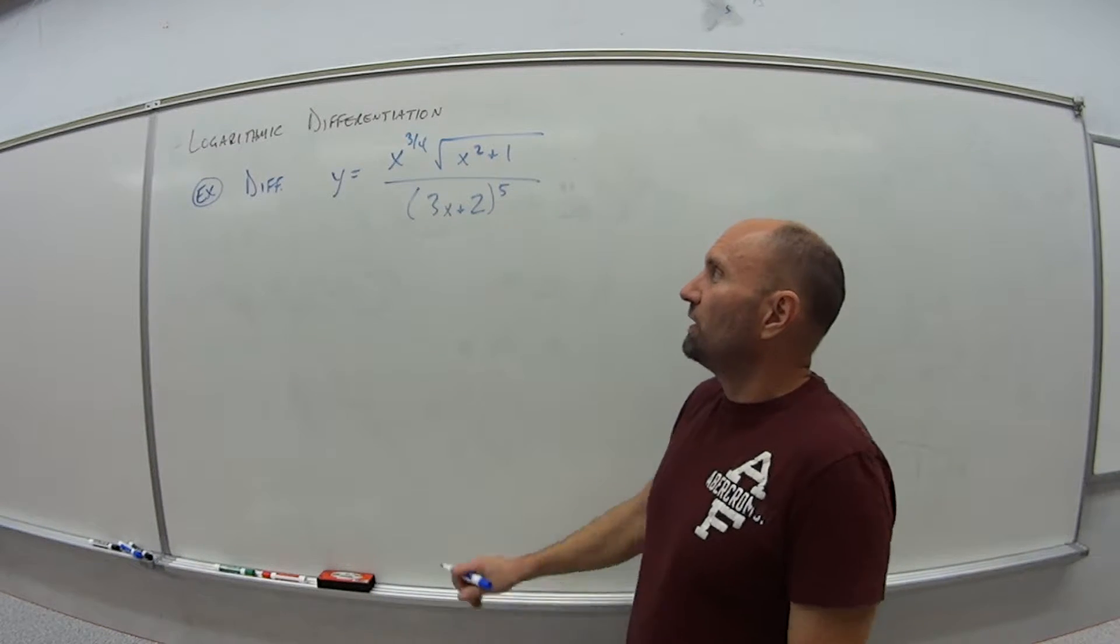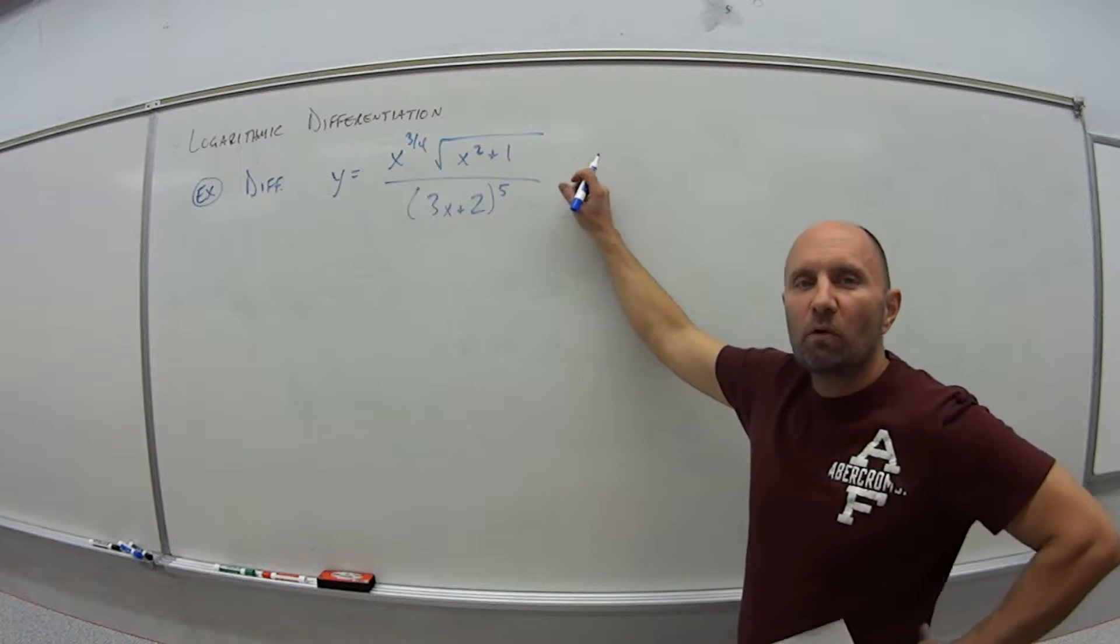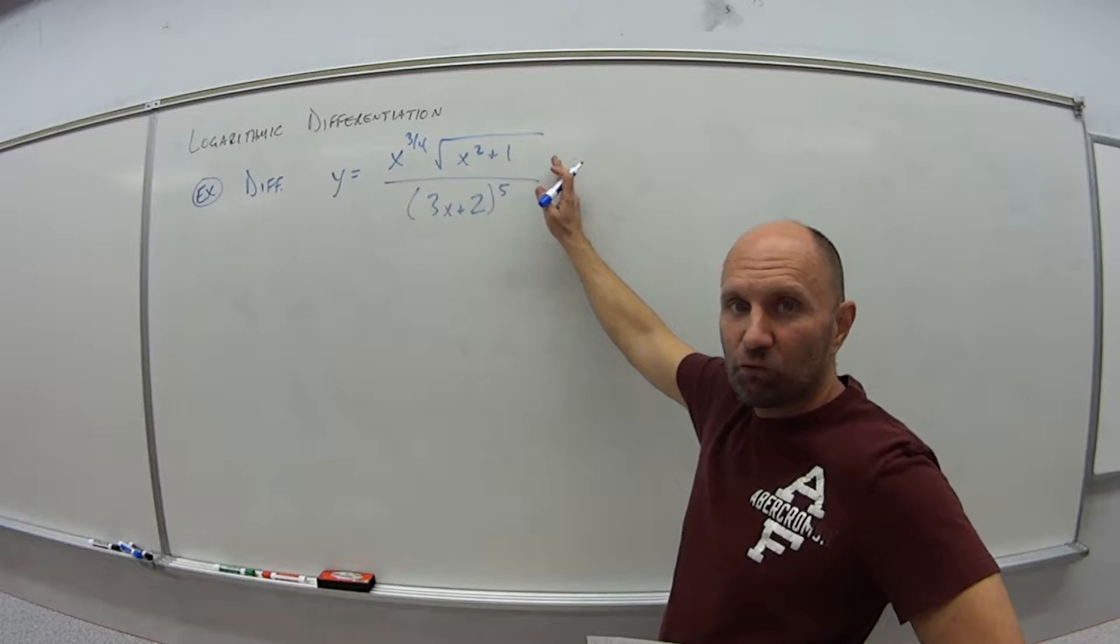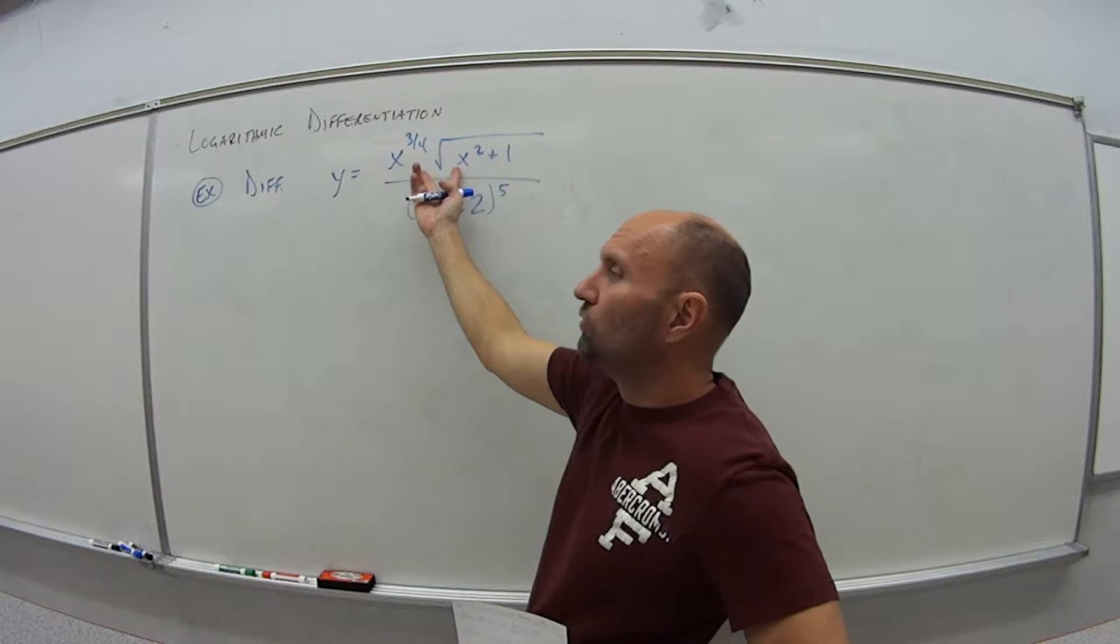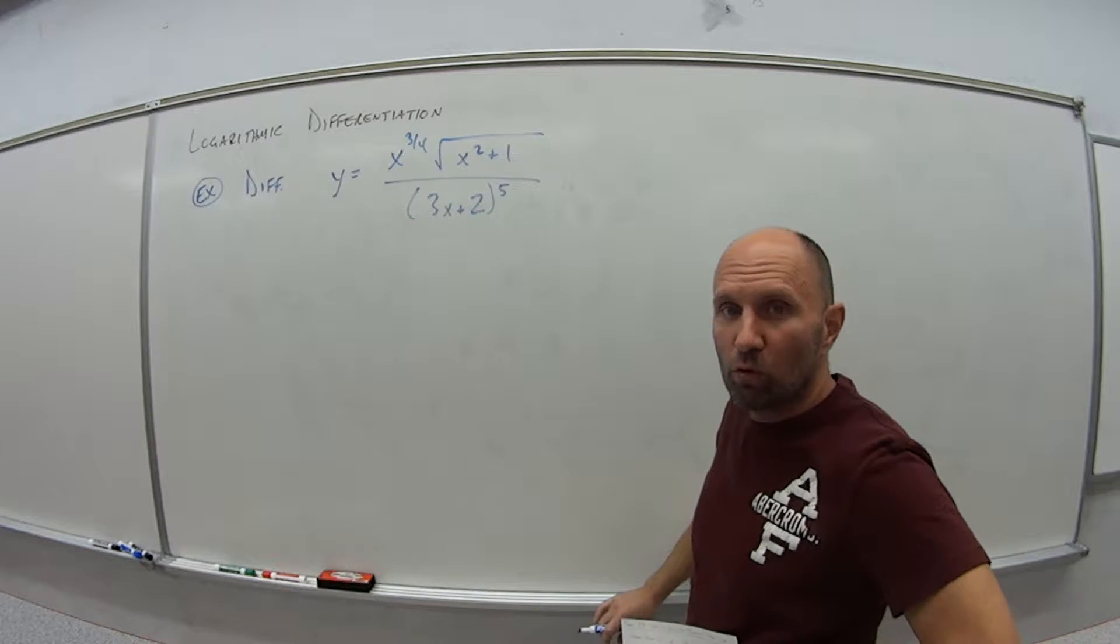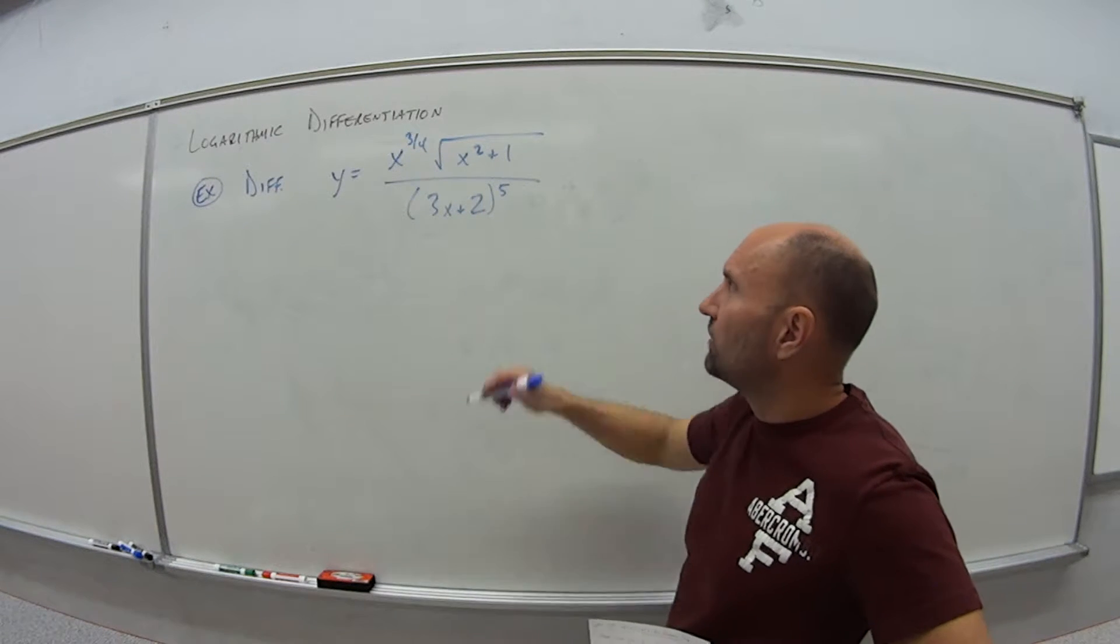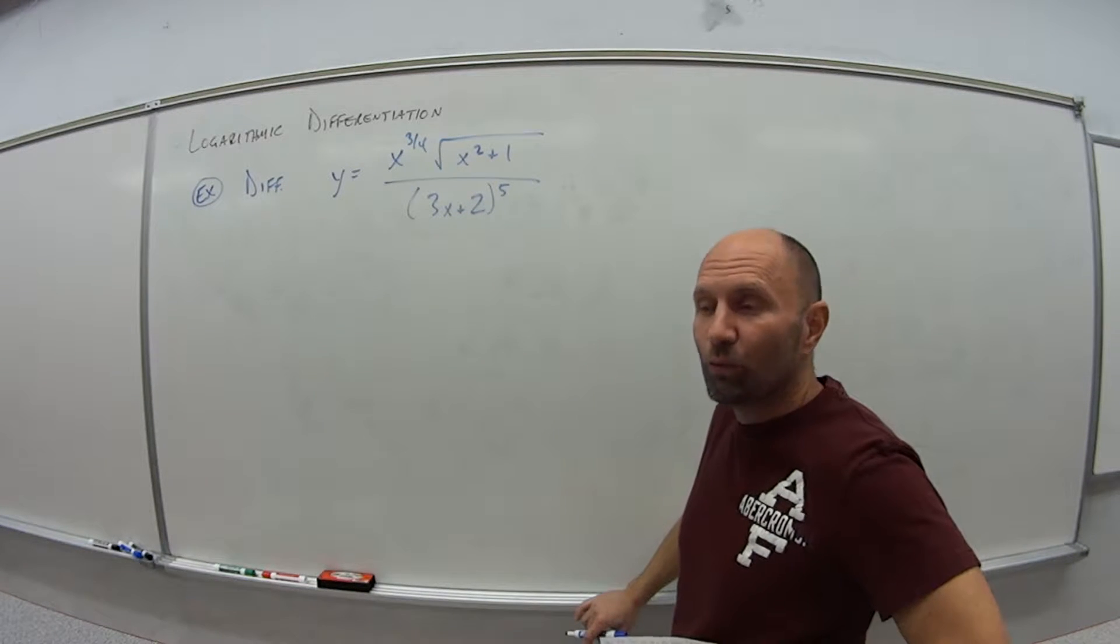If I was just to try to figure out y prime equals something, what do I have to do here? Well, I have a quotient, so I'm going to have to apply the quotient rule. I have a product in the numerator, so I'm going to have to apply the product rule when I get to that point. I have square roots, so that's going to give me negative exponents, things moving all around. This is going to get really messy in a big hurry, right?